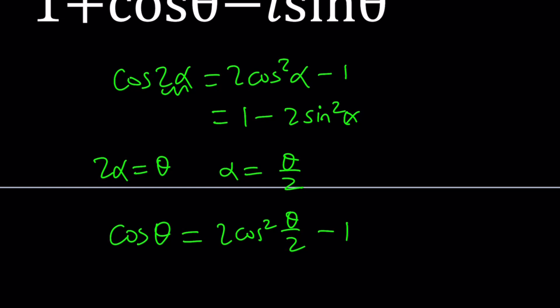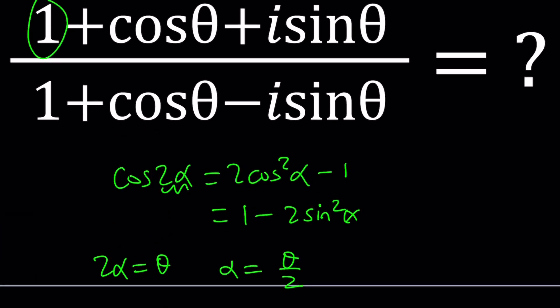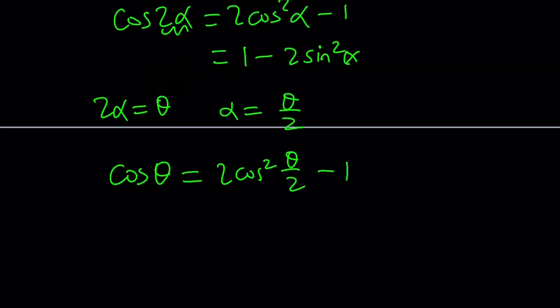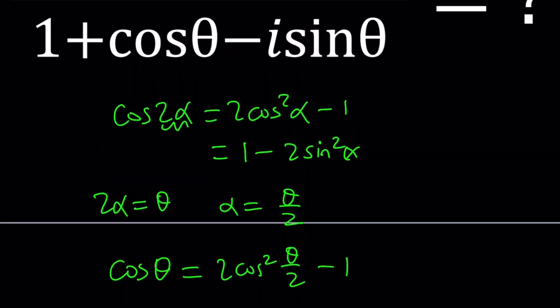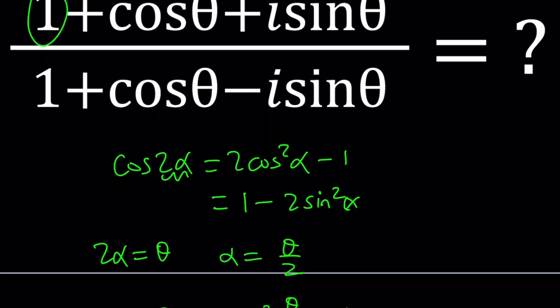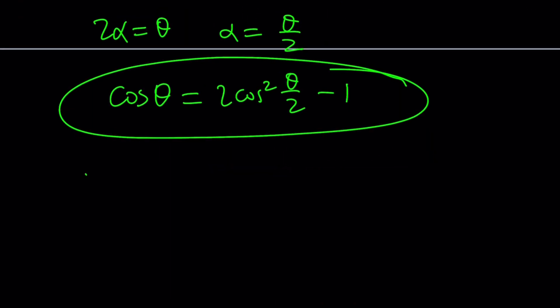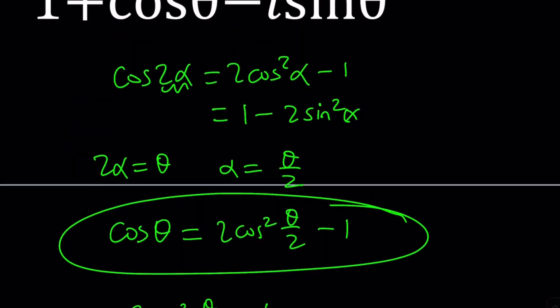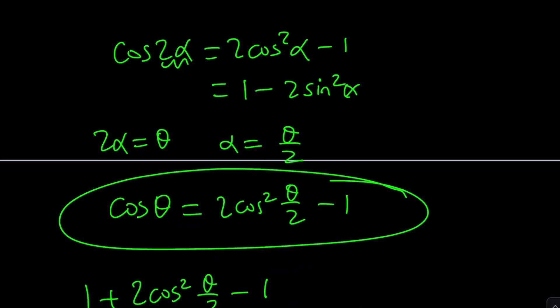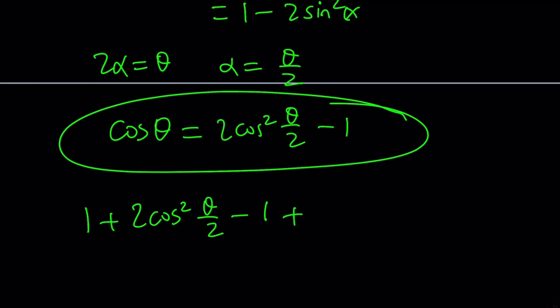And this is the one that I'm going to use because there's a positive one, and I would like to cancel that out. So let's go ahead and replace cosine theta with this. 2 cosine squared theta over 2 minus 1. That's going to give us 1 plus 2 cosine squared theta over 2 minus 1. And remember, that's just the 1 plus cosine theta part, and then we have the plus i sine theta. What am I going to do with sine theta though, right?